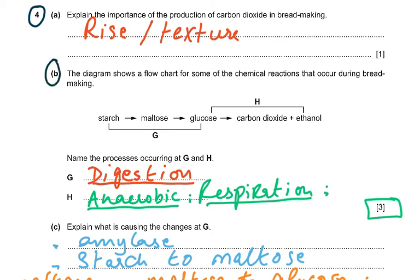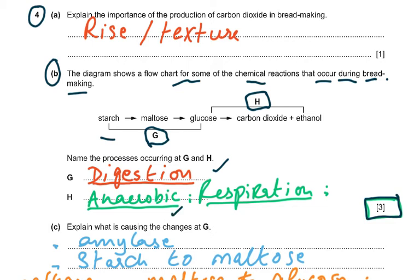Part B: a flow chart shows starch → maltose → glucose (step G) → carbon dioxide and ethanol (step H). Name the process at G: that is digestion. Name the process at H: that is anaerobic respiration. There are three marks: one for digestion, two for anaerobic respiration — so write 'anaerobic respiration' to get both those marks.